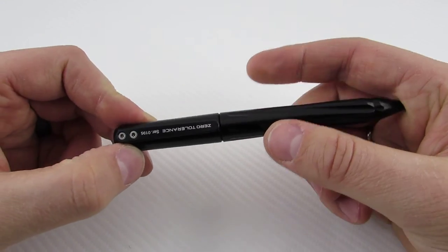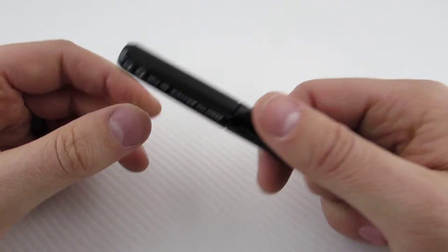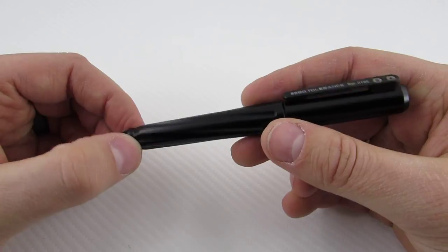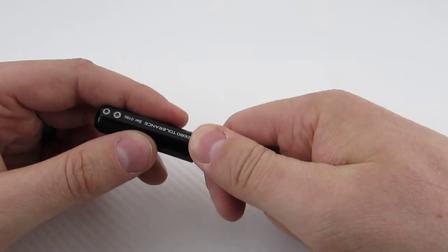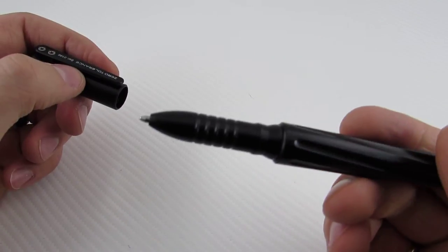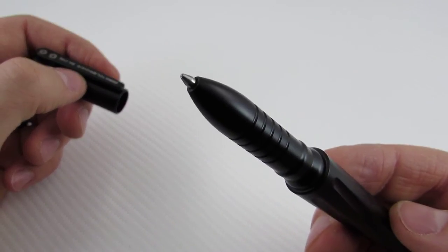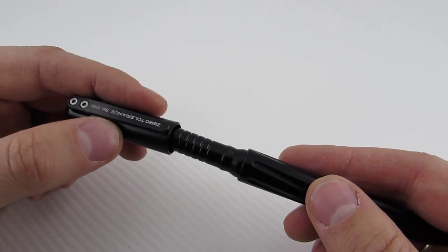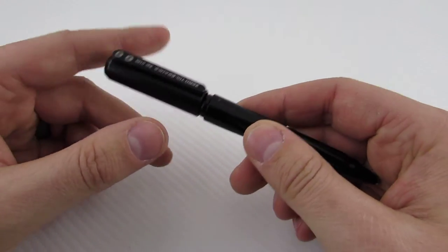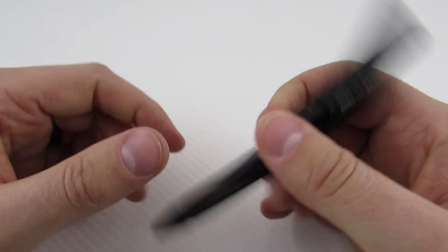Weighs in at 1.3 ounces and is made in the USA. Obviously it's a pen and does fall under the tactical pen role. It comes with a right in the rain cartridge which is quite similar to the Fisher Space Pen refill.